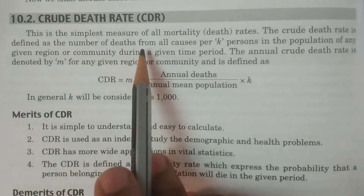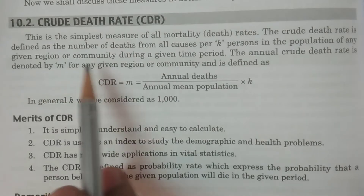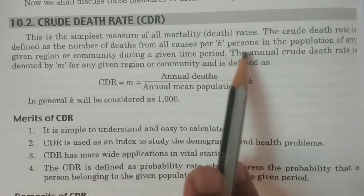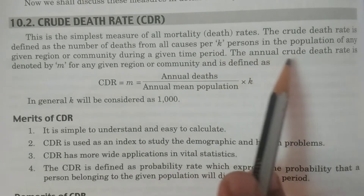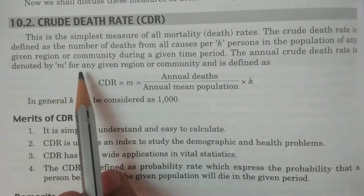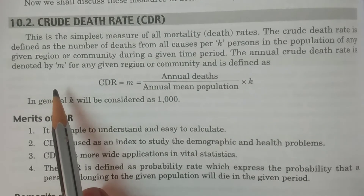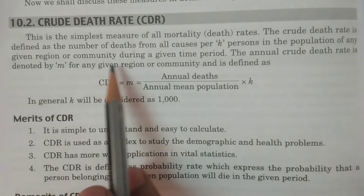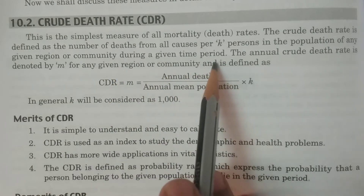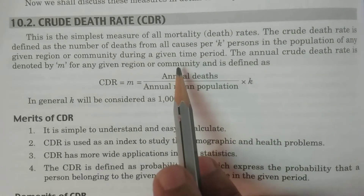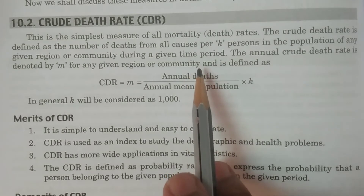This is the simplest of all the measures of mortality rates. The crude death rate is defined as the number of deaths from all causes per K persons - usually K equals 1000 persons - in the population of any given region, whether a country, state, district, or community, during a given time period. Such a death rate is known as crude death rate.